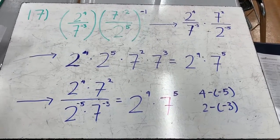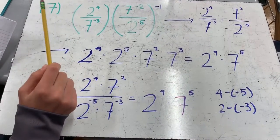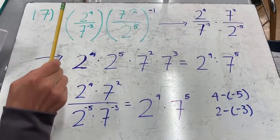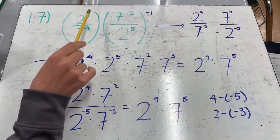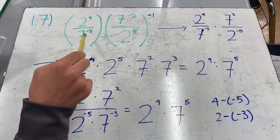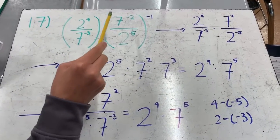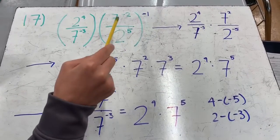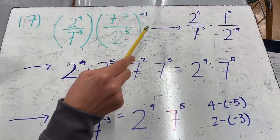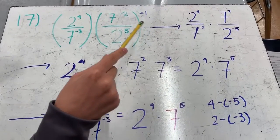Our checkpoint is 5a, problem number 17, and our problem is 2 to the 4th power over 7 to the negative 3rd power, multiplied by 7 to the negative 2nd power over 2 to the 5th power, all to the negative 1st power.